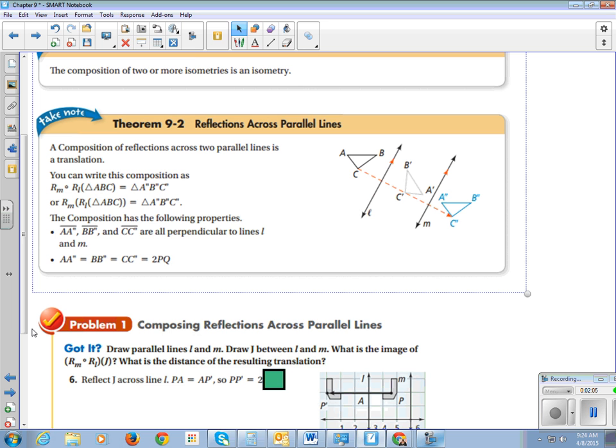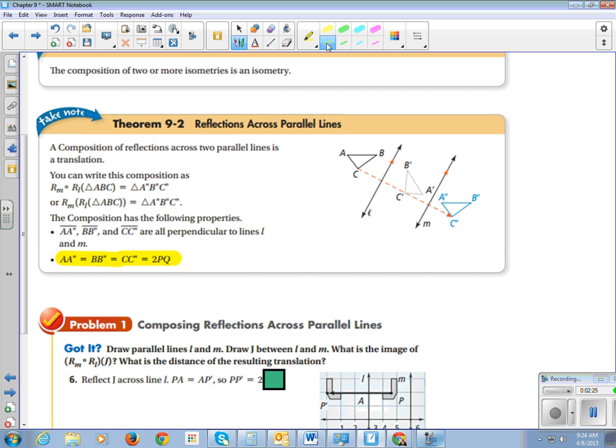And they're all, ooh, this is a good one. Let's get our highlighter out. Because if you look, the line A double prime, B double prime, C double prime are all equal to two times PQ. So here is, I'm going to get my pen out. So from here to here, from B to B double prime, and then C to C double prime. They are all equal to two times PQ.